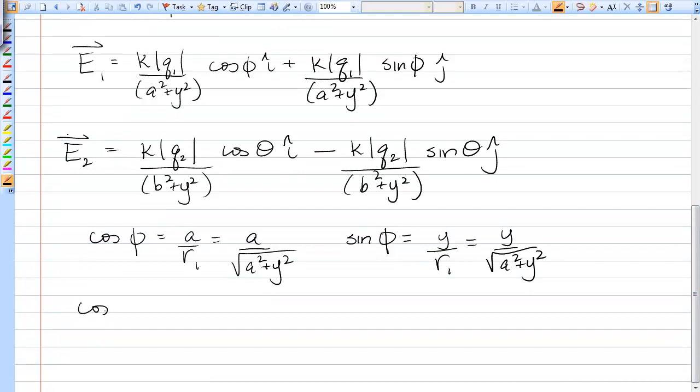And for theta, we just substitute in B instead of A. So we have B over R2, so it's B over the root of B squared plus Y squared, and sine theta is Y over R2, so it's Y over the root of B squared plus Y squared.